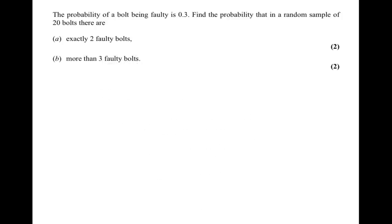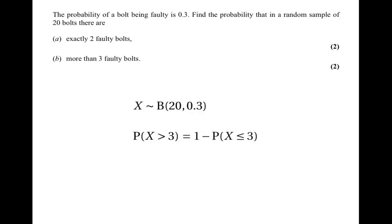The next part of the question asks for the probability of getting more than 3 faulty bolts. We're still dealing with x ~ B(20, 0.3), but this time we want P(X > 3). We'll use the tables, but we can't look up P(X > 3) directly. Instead, we use the complement: P(X > 3) = 1 minus P(X ≤ 3), because the opposite of being greater than 3 is being less than or equal to 3.